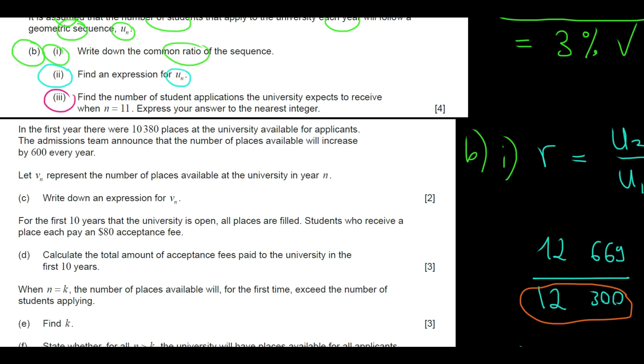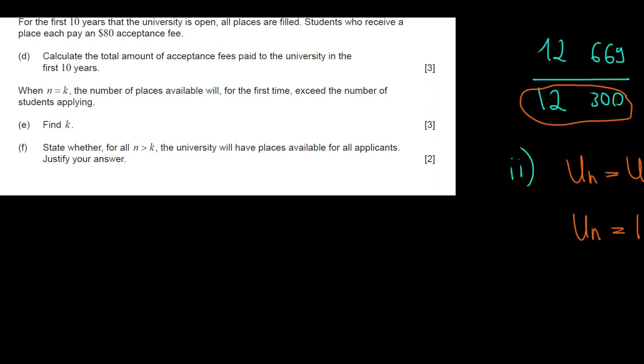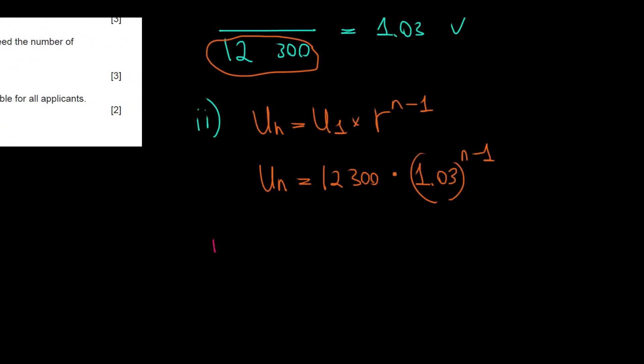And we will look at the third one. Find the number of student applications the university expects to receive when N equals to 11. Express your answer to the nearest integer. Well, that's just a matter of substitution into the formula. We are looking for the 11th year. So N equals to 11. We are going to do U11 equals to 12,300 times 1.03 to the power 11 minus 1. And that would bring us to an answer of 16,530. So that's part B.